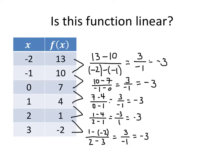So all these rates turned out to be the same, and because they're all the same, that means this function is linear. In fact, it's a linear function whose slope is negative 3. All of those negative 3's that we got tell us that this really is a linear function, and that it has a slope of negative 3.